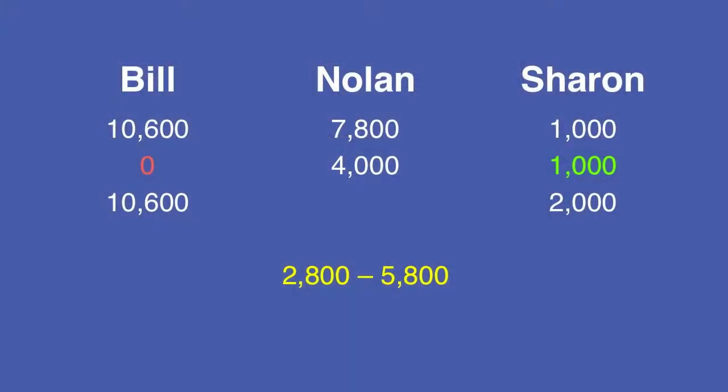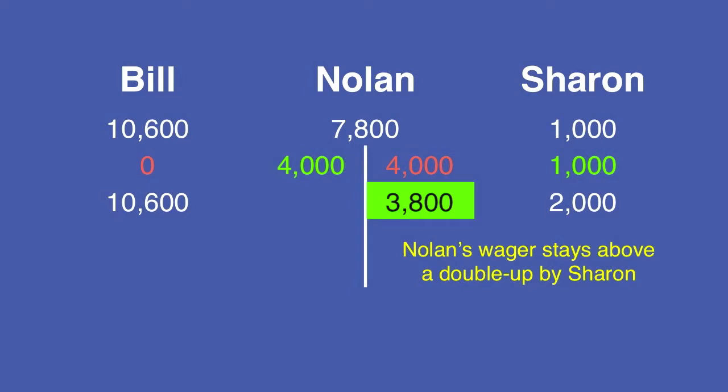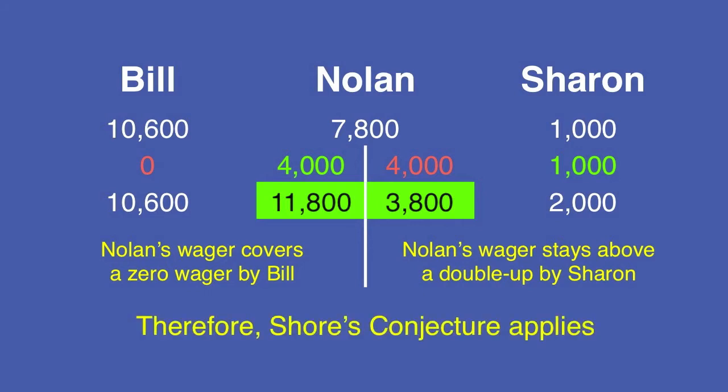So let's say he picks the wager of 4,000. If he gets it wrong, he'll have 3,800, which is more than Sharon. If he gets it right, he'll have 11,800, which is more than what Bill has going into final jeopardy.